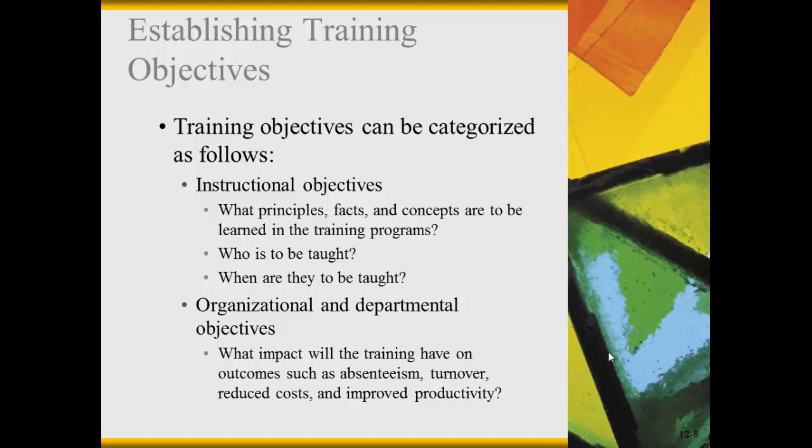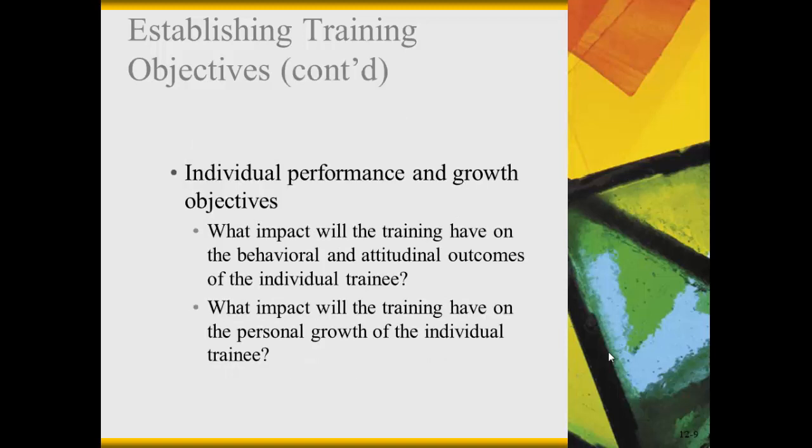The second type is organizational and departmental objectives — those training objectives oriented toward keeping the employee active, on the job, and productive, making sure things are done at minimal cost, and reducing turnover and absenteeism. Another objective is individual performance and growth, since employees want to feel their employers care about their professional development. We also have to consider what impact the training will have on the behaviors and attitudes of the person receiving it, and what type of growth the individual will experience.